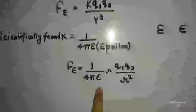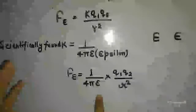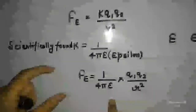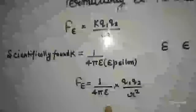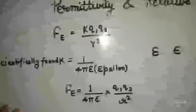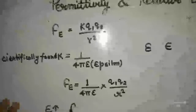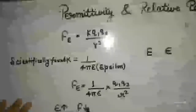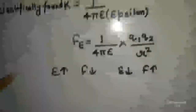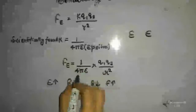Here we can see that Fe is in the numerator and epsilon is in the denominator. When epsilon's value is decreased, Fe's value will be increased, and when epsilon's value is increased, Fe's value will be decreased. So we can write: when epsilon increases, F decreases; when epsilon decreases, F increases.